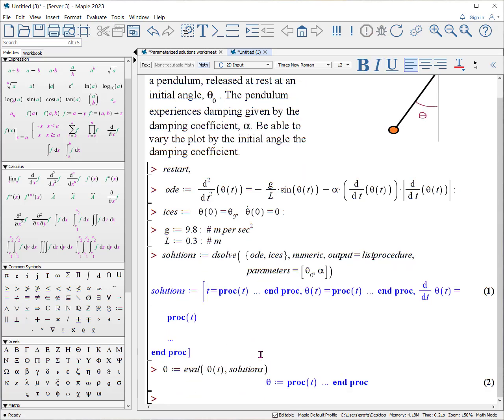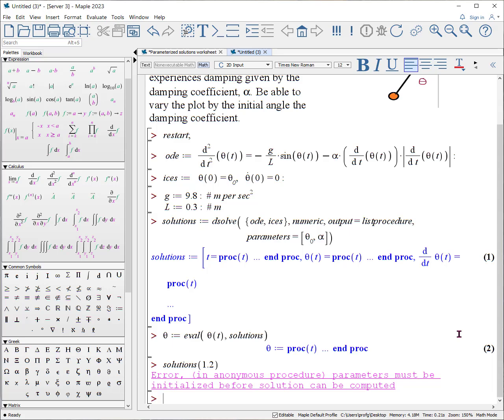Okay, and now theta is a function of t. Now you might say, well, why can't we look at some values? The problem is we have not defined any of the numbers for θ₀ and α, the two parameters. So if I actually say what are our solutions at say a time of 1.2, it will say the problem is the parameters have not been initialized.